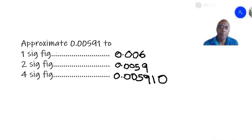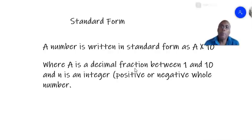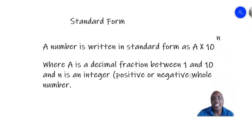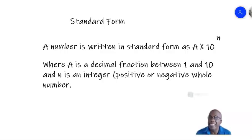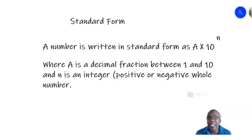We'll now go on to standard form. To approximate to standard form, we write a number — whatever decimal we are given — in the form a times 10 to the power of an integer n. So a is a decimal fraction and n is an integer. Remember, an integer is a positive or negative whole number.